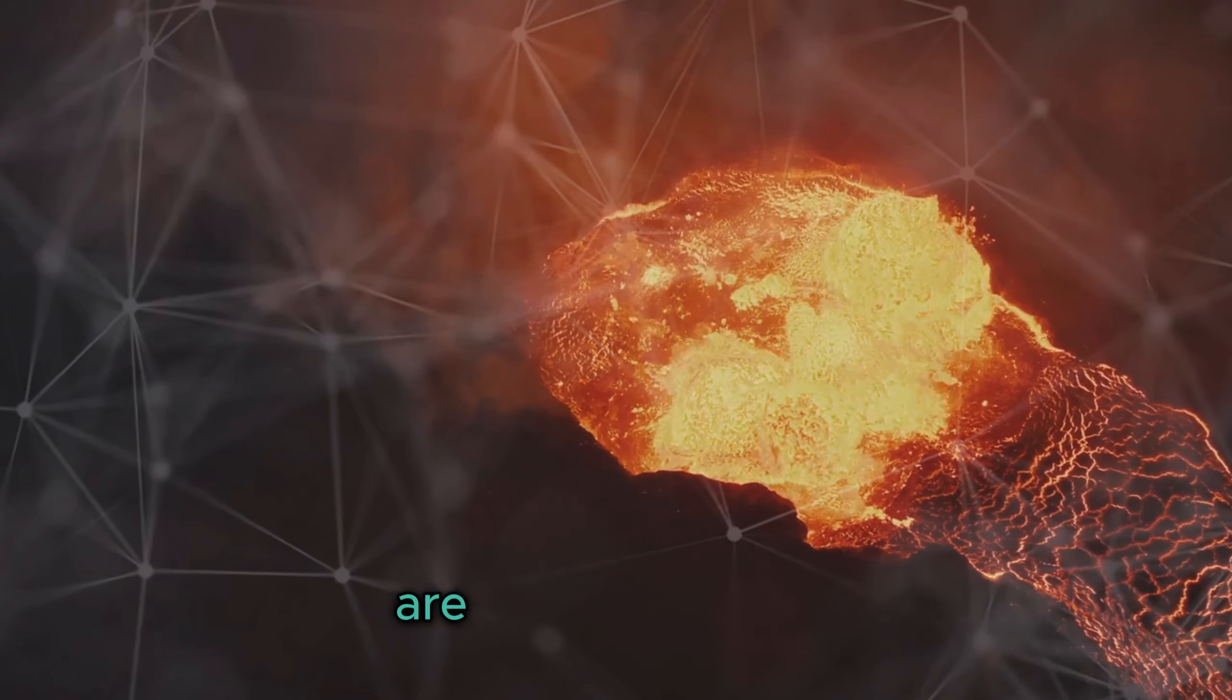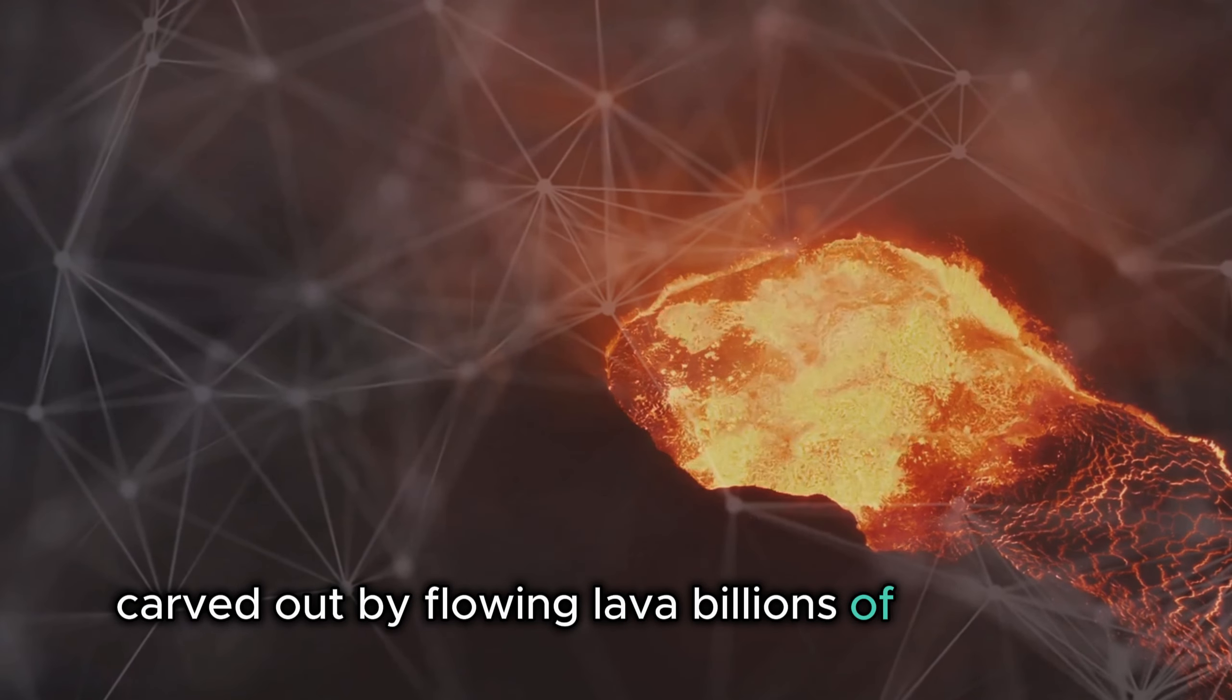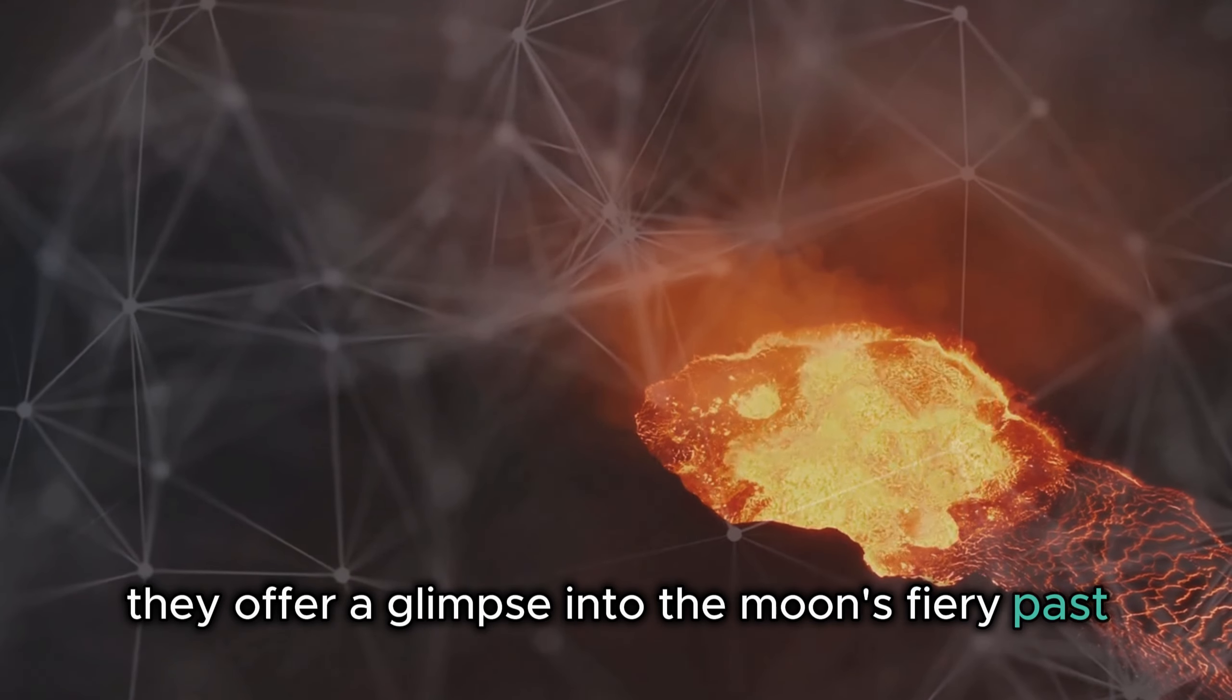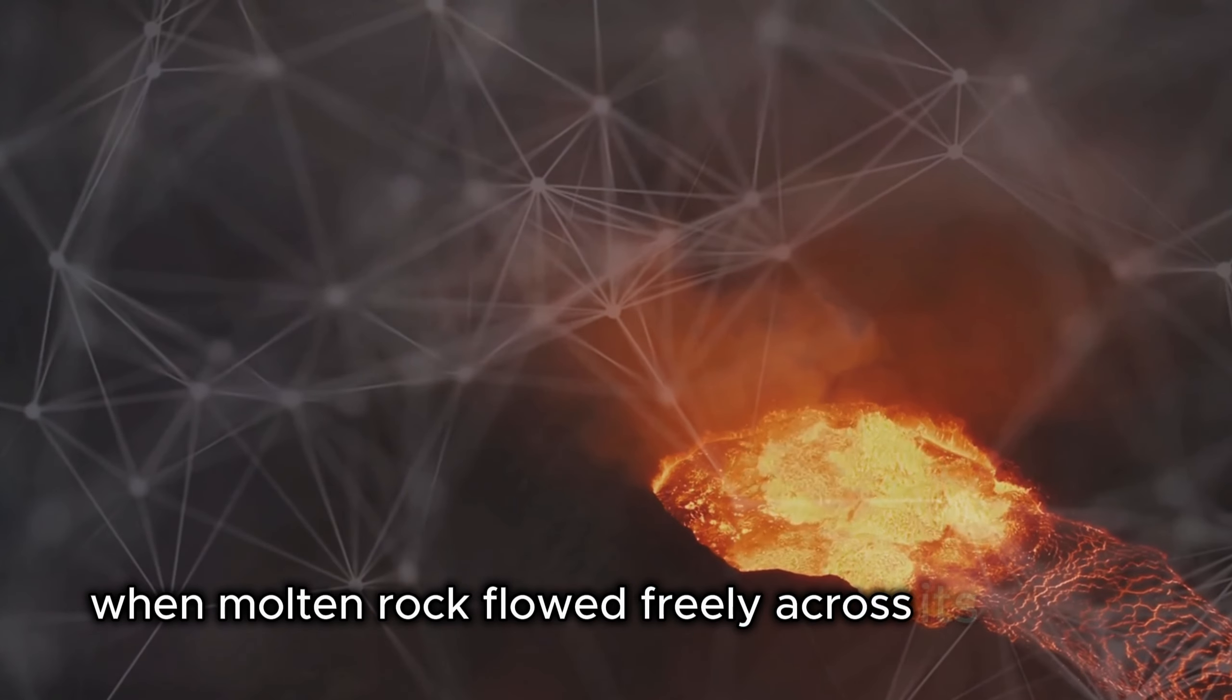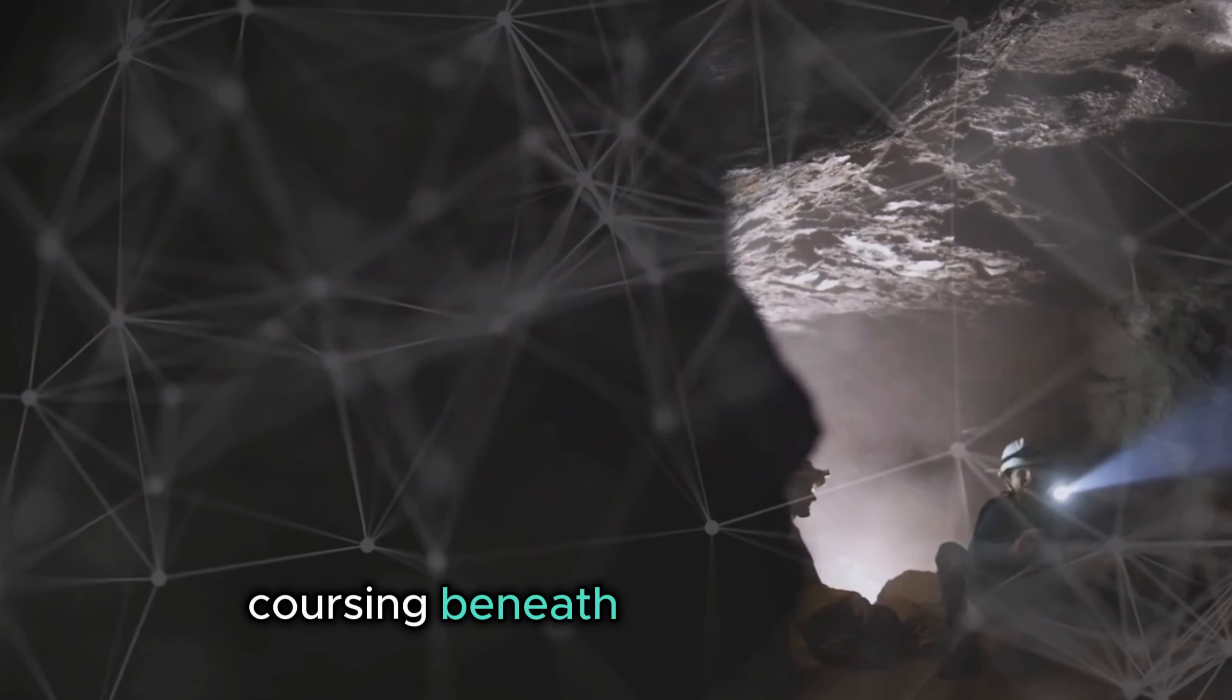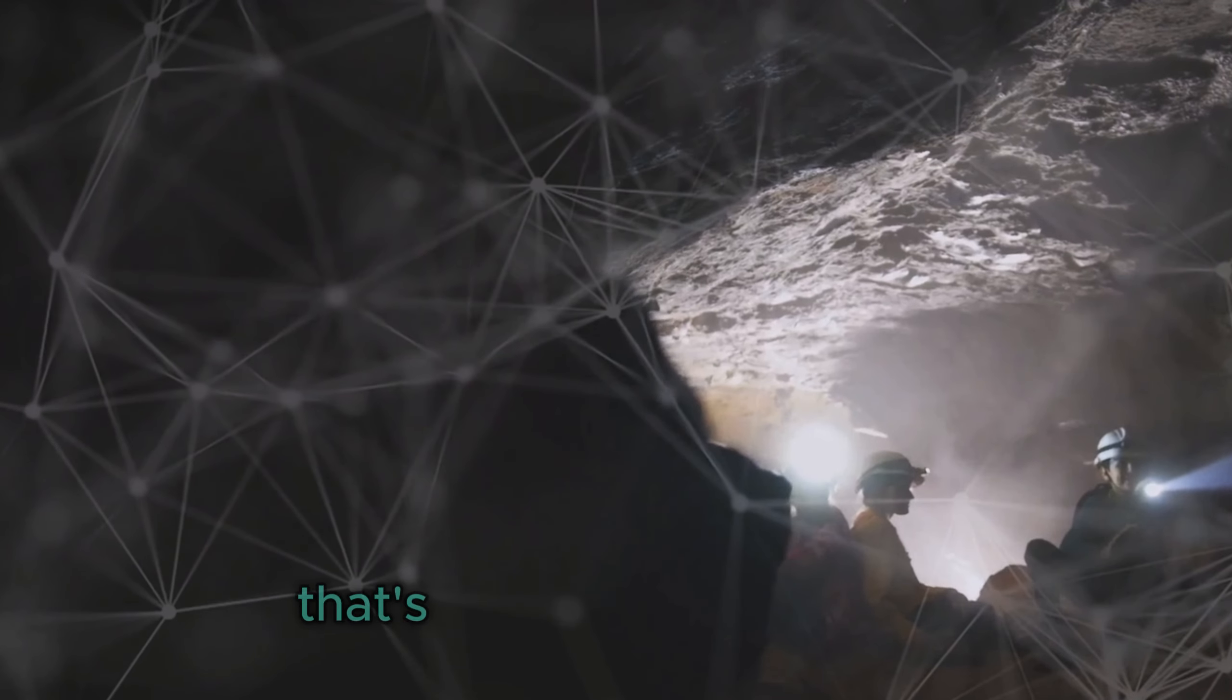These lava tubes, formed by volcanic eruptions, are like giant tunnels carved out by flowing lava billions of years ago. They offer a glimpse into the Moon's fiery past, a time when molten rock flowed freely across its surface. Imagine a river of molten rock coursing beneath the lunar surface, eventually leaving behind a hollow cavity. That's a lava tube.